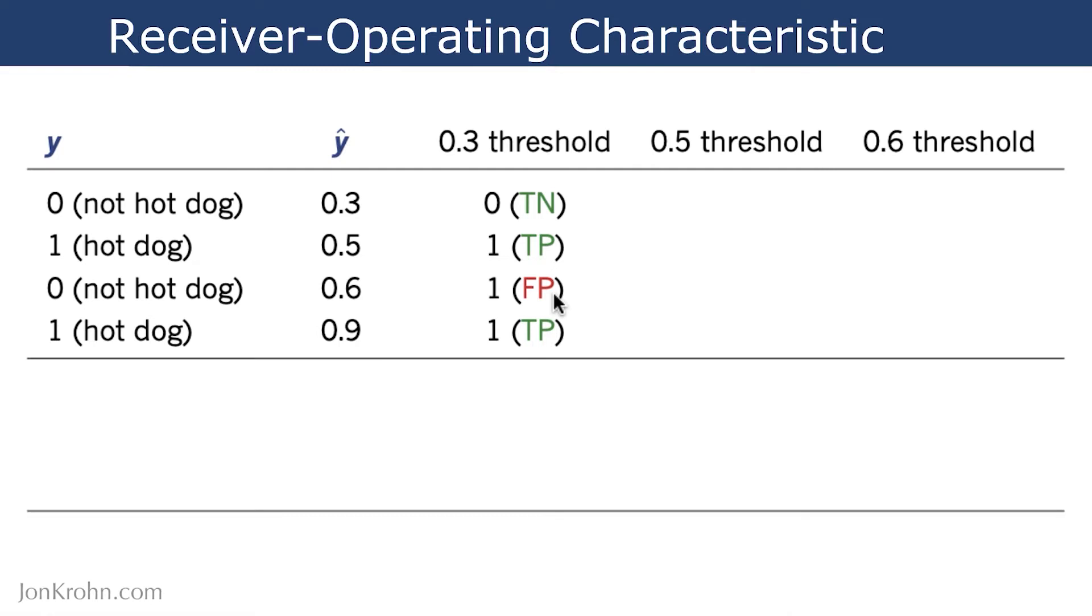We then repeat this procedure at all of the thresholds except for the very top one, and you'll kind of see why when we get through these. So let's go to 0.5 first. So now we consider 0.5 to be the threshold. Anything at 0.5 or below is considered to not be a hot dog, and anything above 0.5 is considered to be a hot dog.